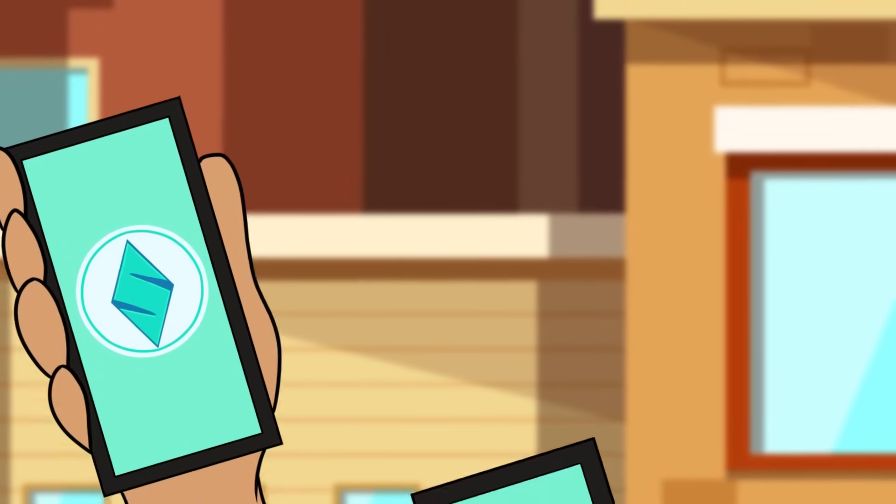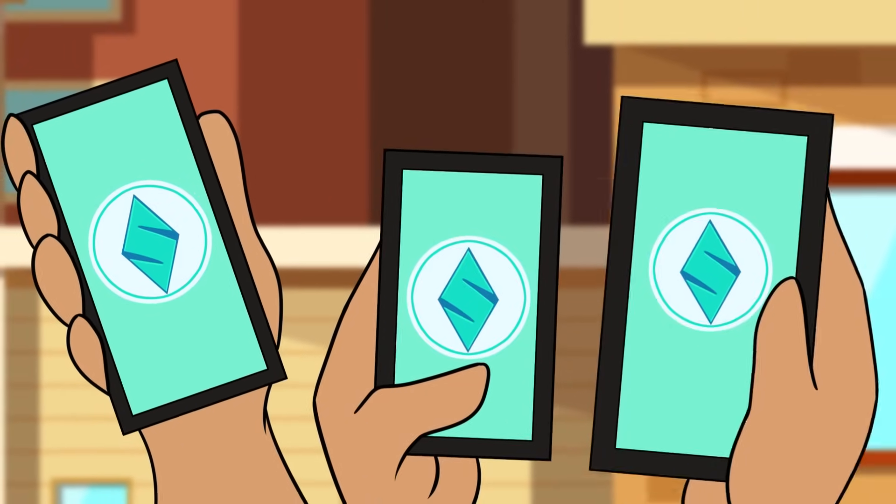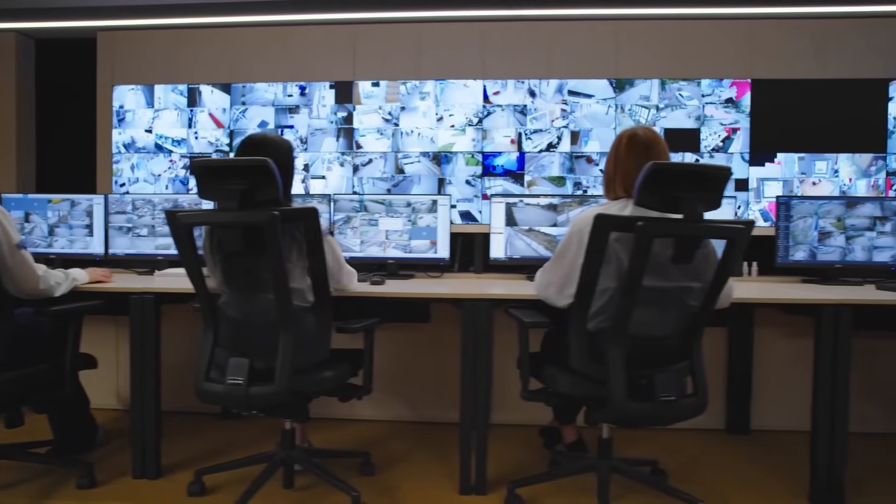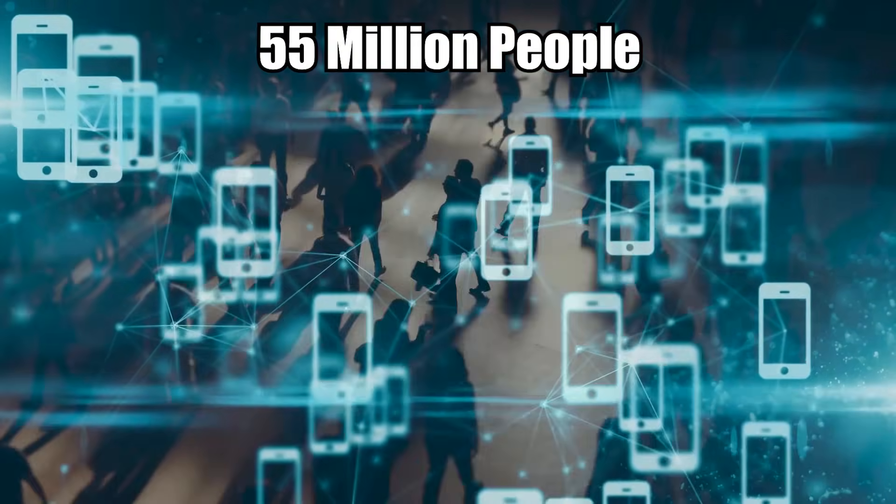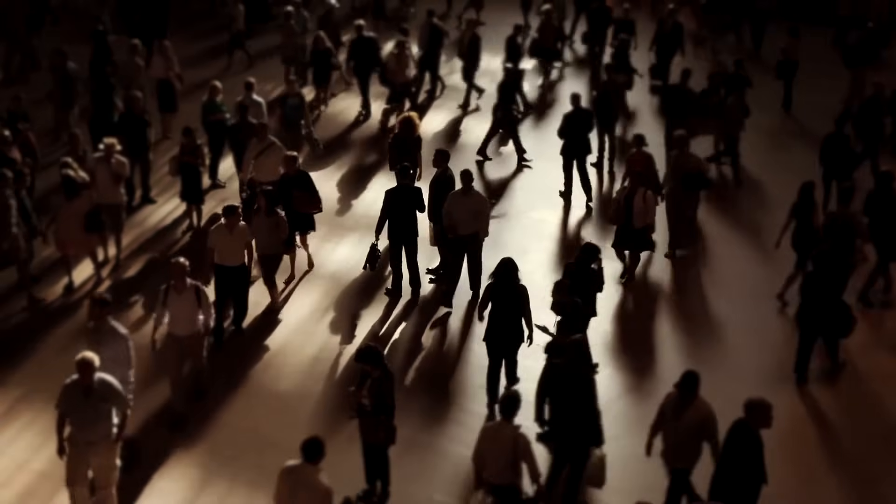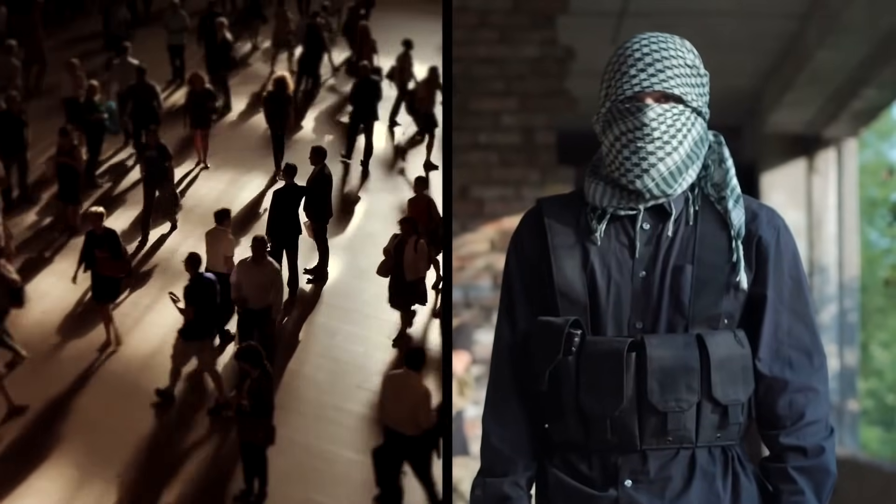In Pakistan, Skynet is used to comb through the mobile phone network. Skynet engages in what's being described as mass surveillance, looking through the metadata of 55 million people and rating each individual on their likelihood of being a terrorist. Then that data is used to murder people.